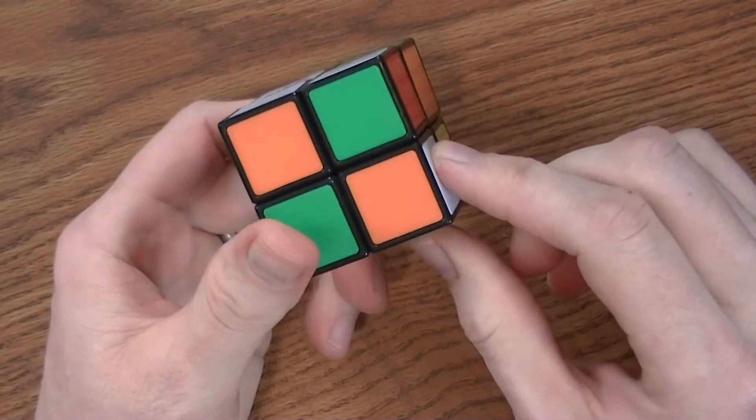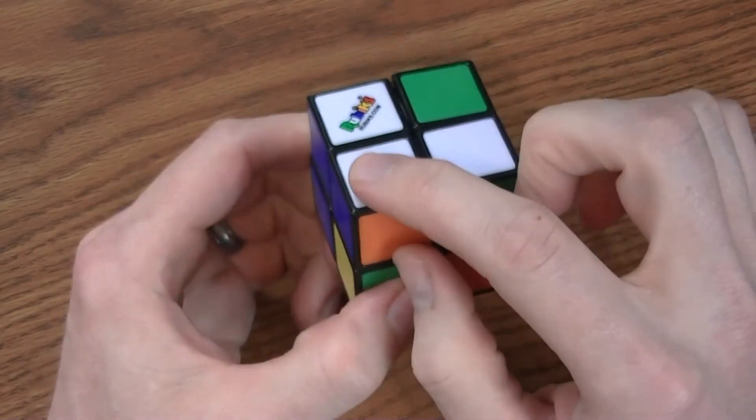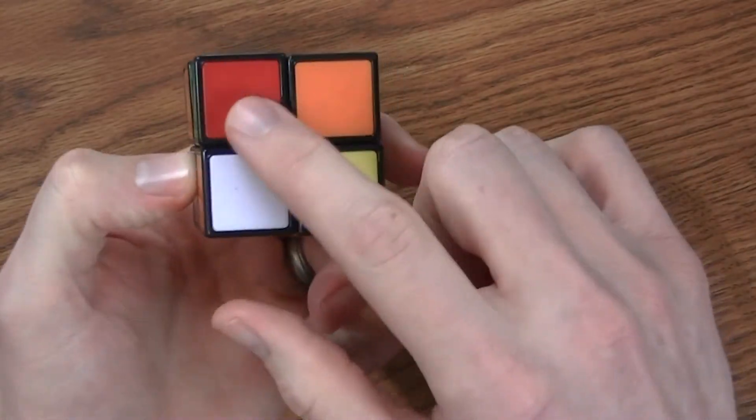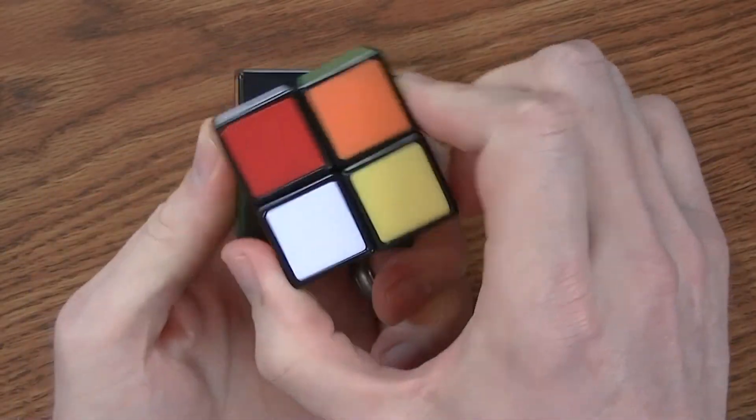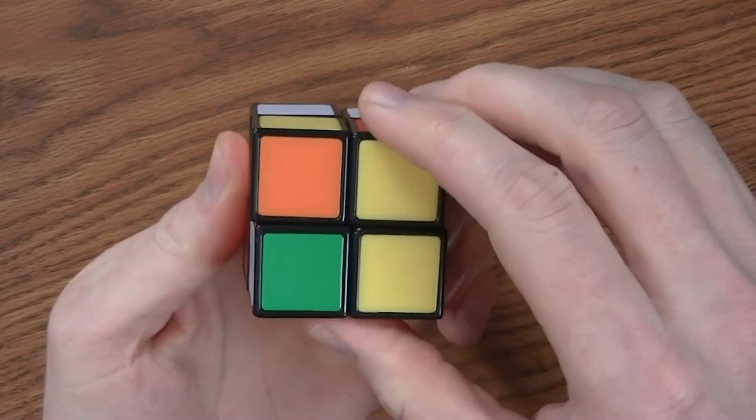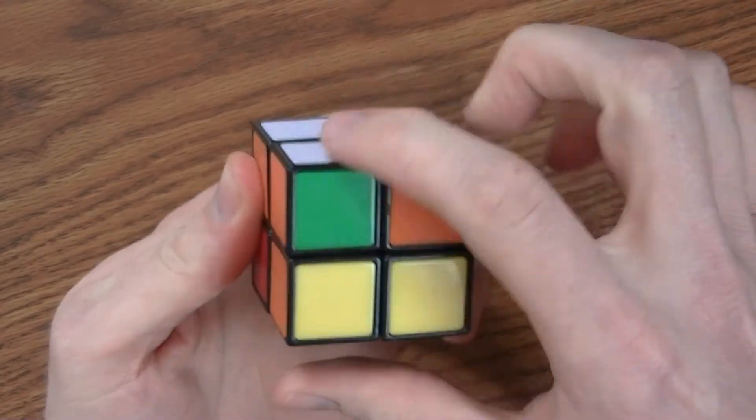I'm going to now put this piece that has white and orange up to there, using that same series of moves. I turn the face, the bottom or the down, and then the face, right there.